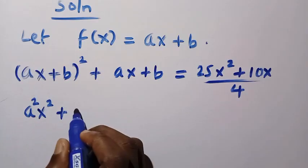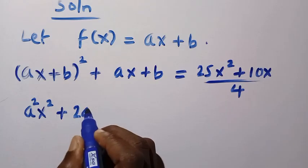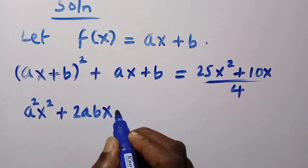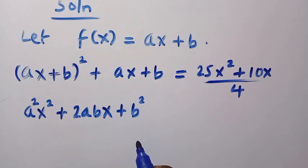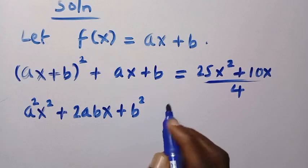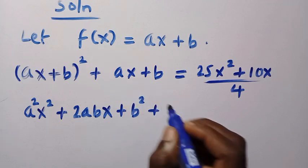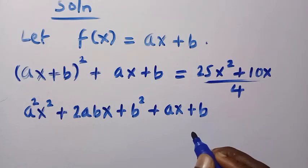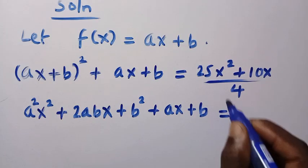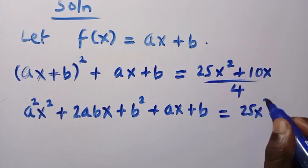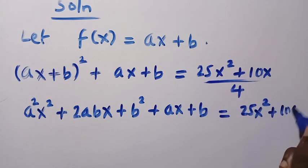2abx plus b squared. So the result of this expansion gives us this. Then we have plus ax plus b equals 25x squared plus 10x divided by 4.